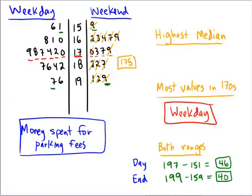For the weekdays, canceling out high and low values from both ends, those cancel out very nicely to leave just one value in the middle. That one value is the median, which is 177. So the weekday also has the highest median because 177 is higher than 175.